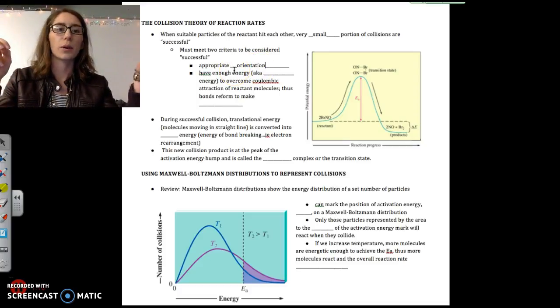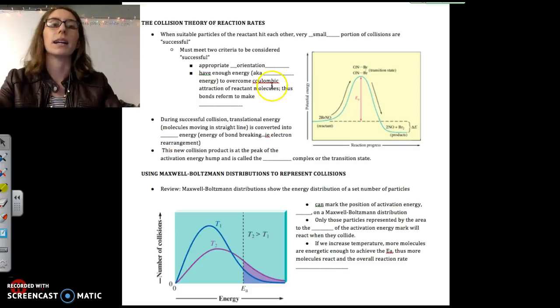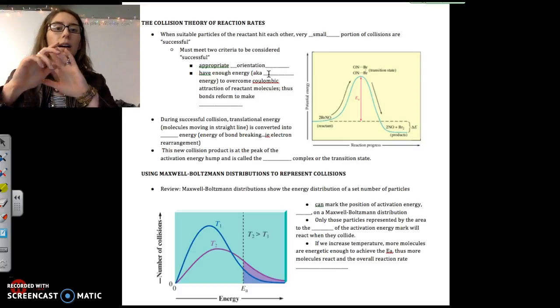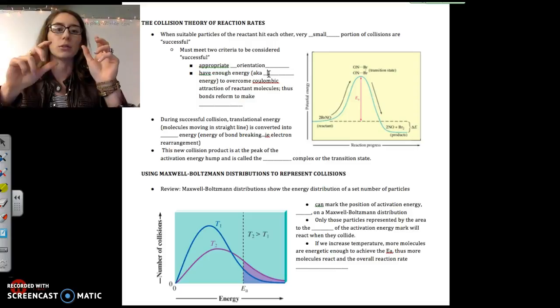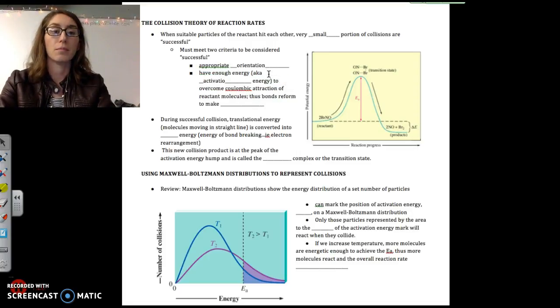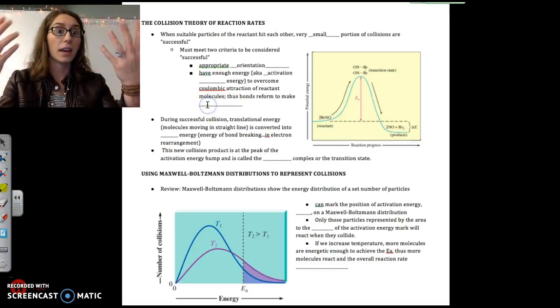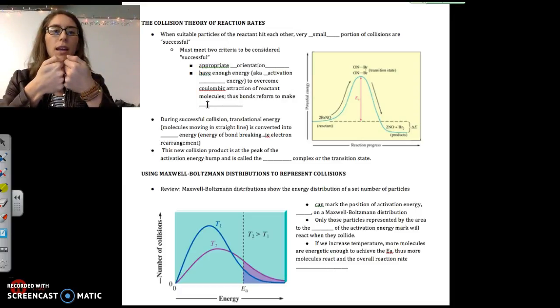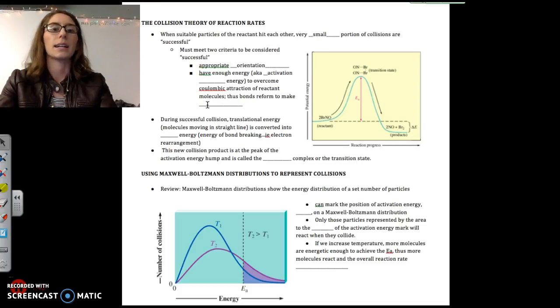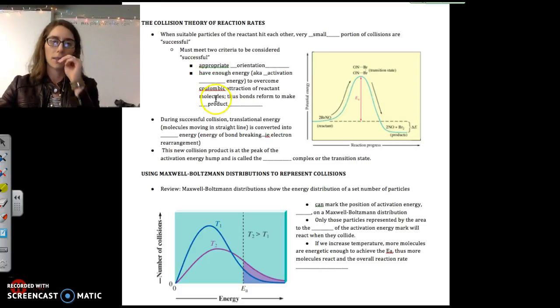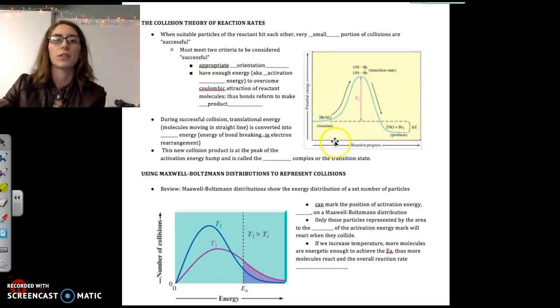In order to be successful we have to meet two criteria. The first one is that the molecules have to hit each other with the appropriate orientation. This is not something we often think about, but if two molecules hit each other but it's not in the areas where the bonds are most likely to rearrange, that's not a successful collision. The orientation that is appropriate just depends on the types of molecules that are colliding. The second criteria is that they have to have enough energy when they collide in order to overcome the coulombic attractions of the reactant molecules. That amount of energy that must be present when the two molecules collide is known as the activation energy.